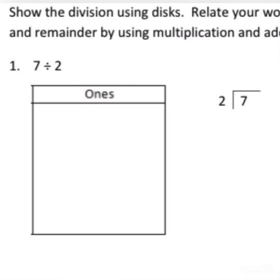Question number 1 is 7 divided by 2. We can see they gave us a place value chart labeled ones. Our first step is to draw 7 disks in the ones place because the number 7 is made up of 7 ones.